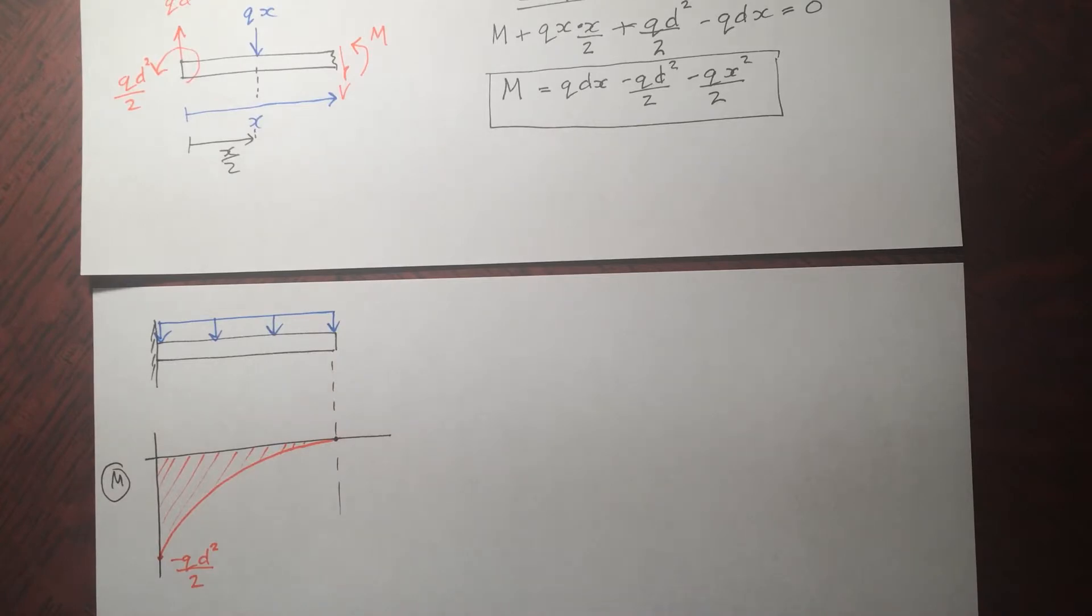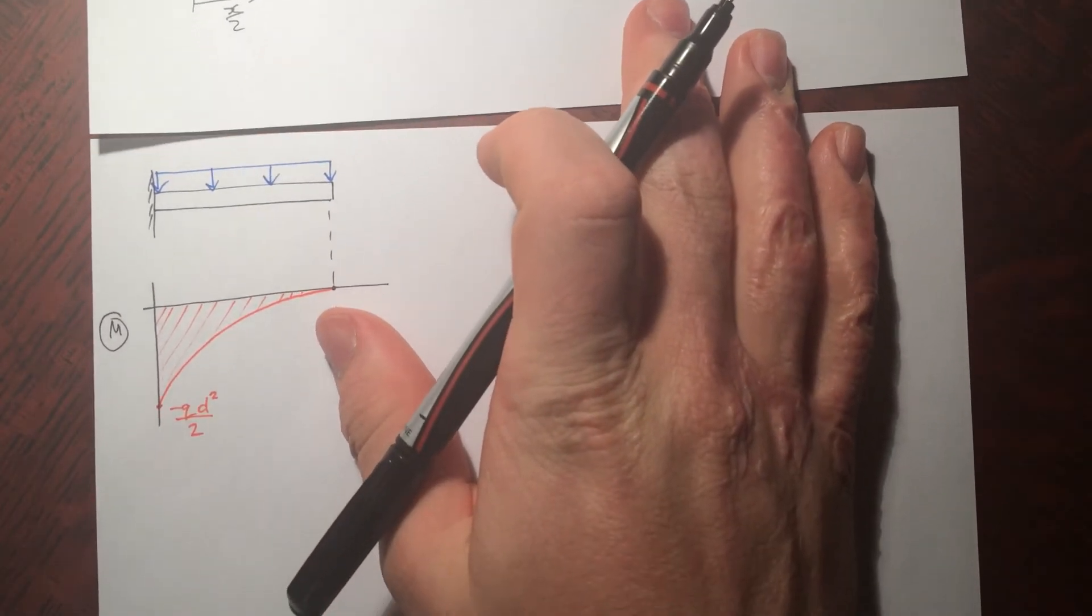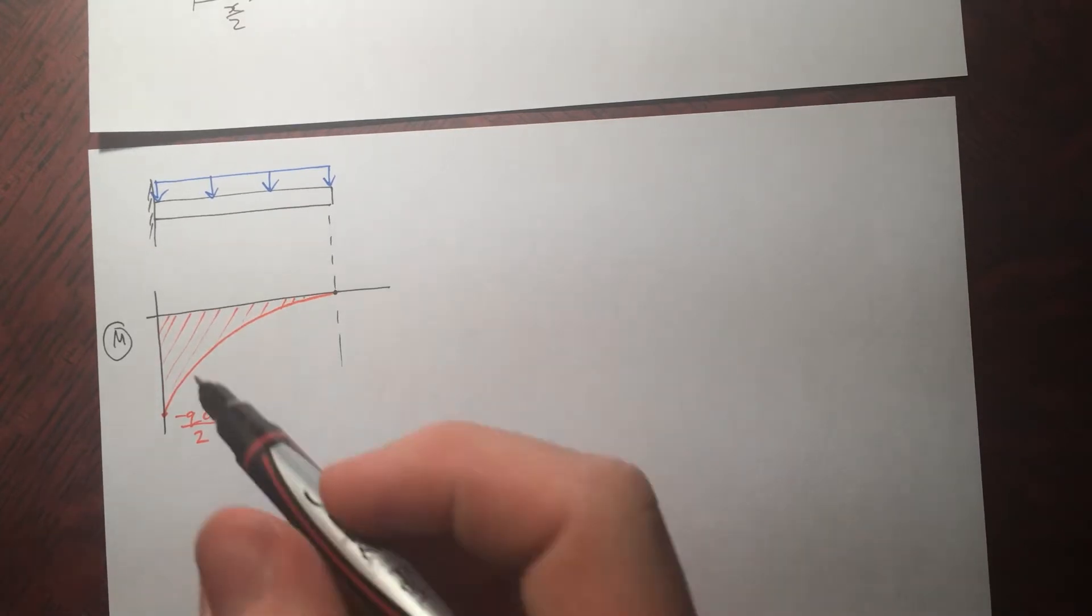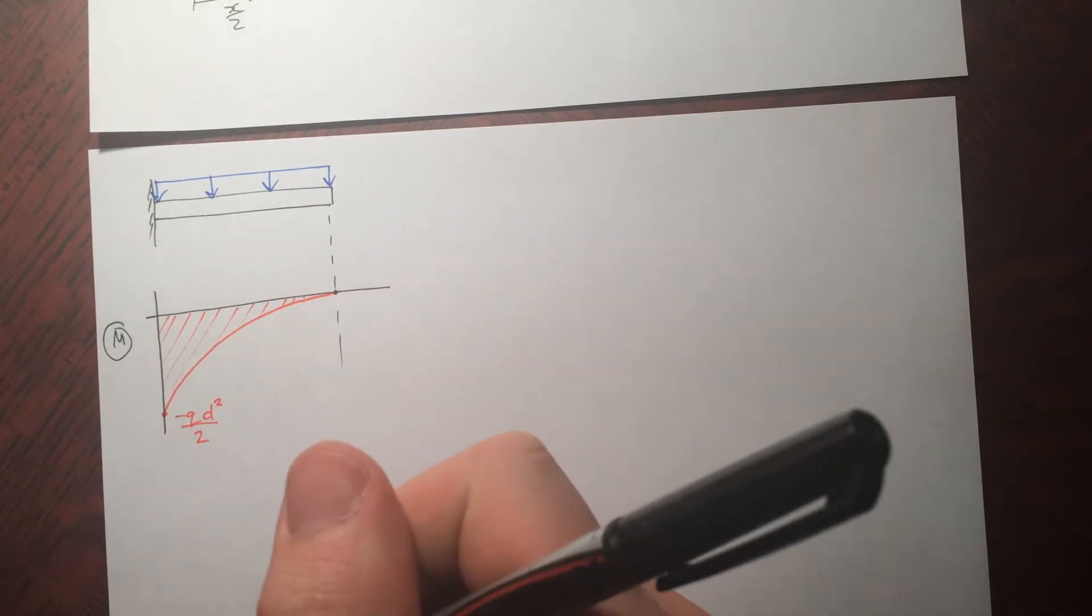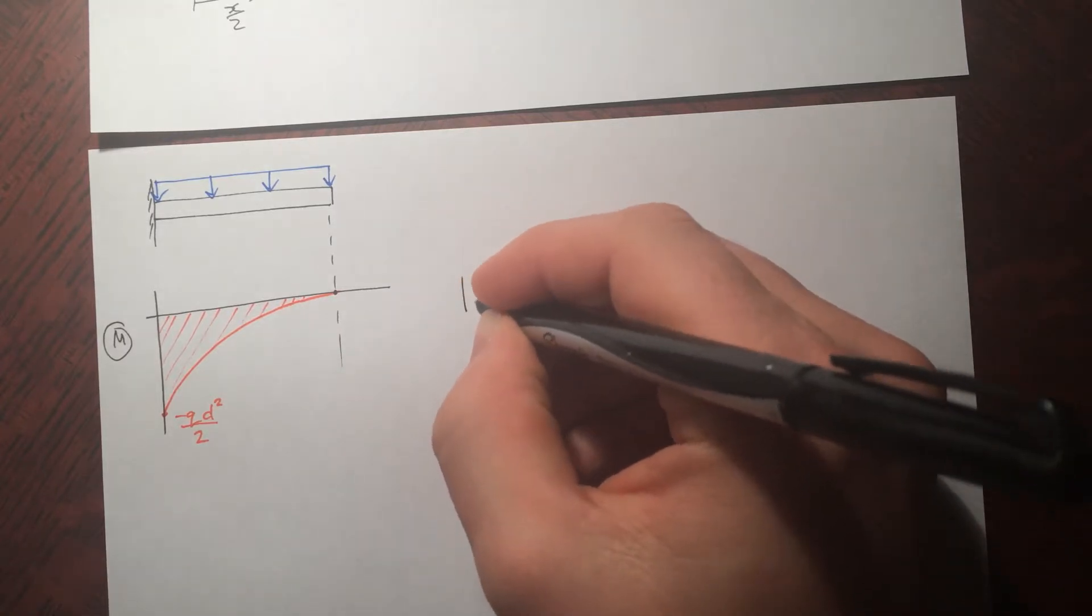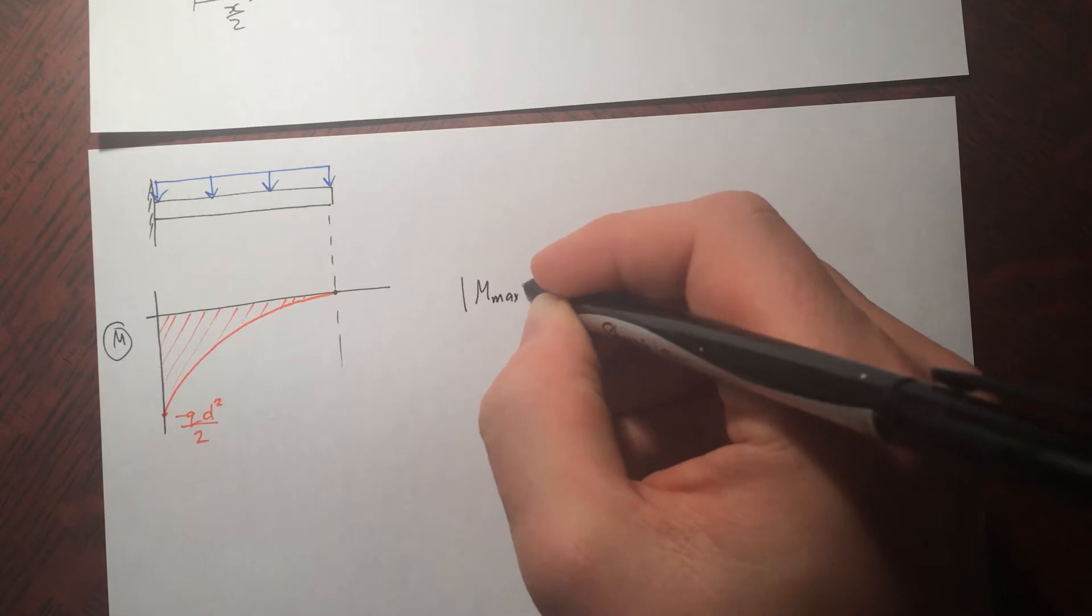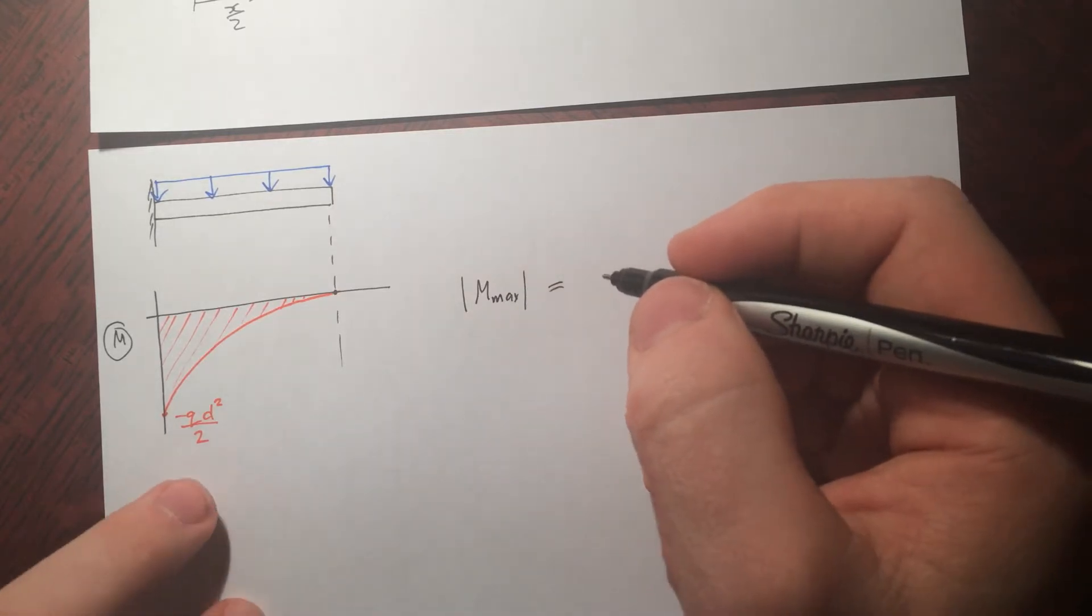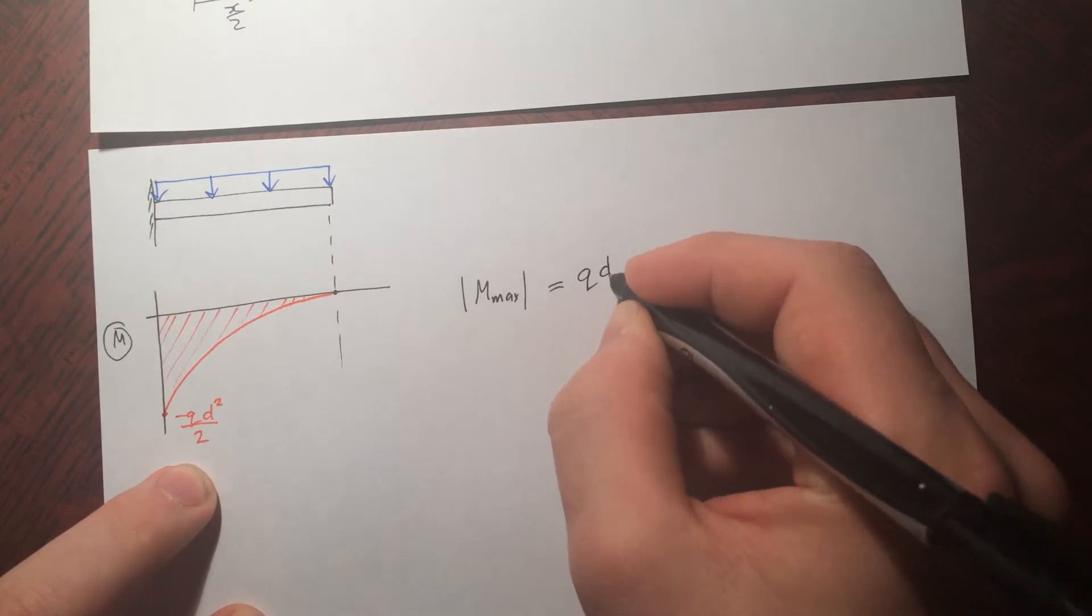So now what's the maximum bending moment? Mathematically the maximum bending moment would be right here at 0. So that's not what we're looking for. We're looking for the magnitude of the maximum bending moment. So basically just the greatest value it can be regardless of the sign, and that's going to be this, qd squared by 2.